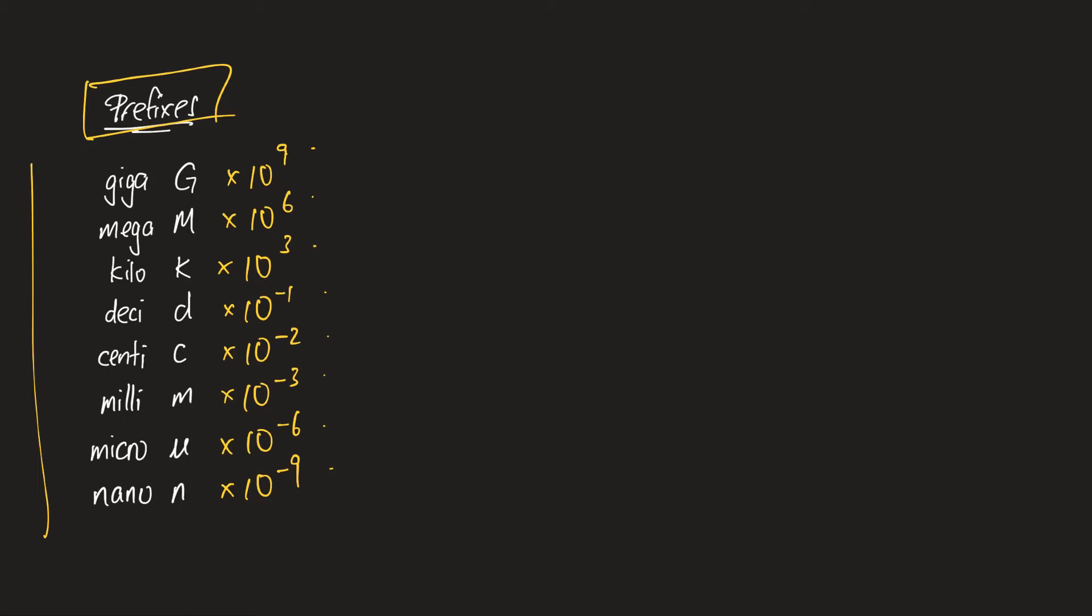Another thing I want you to take note is you can draw a line here. This you can treat like a baseline. Above the baseline, all these prefixes are considered big. Below the baseline here, all these are considered smaller prefixes. This will come in handy when you do the unit conversion later on.